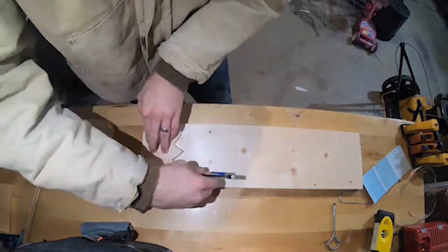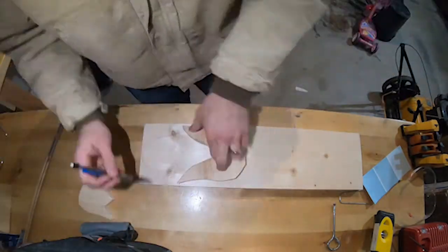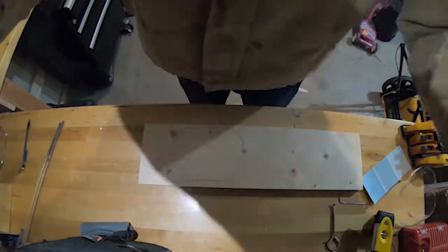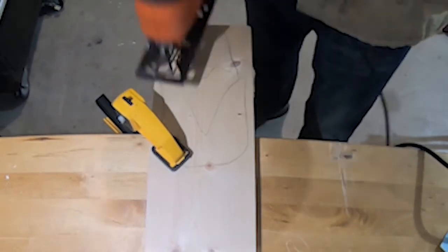The first step is to transfer the template to the wood scraps. You can use wood or plywood. We now need to cut them out. I typically use my jigsaw for this but could also use my router with a straight bit.